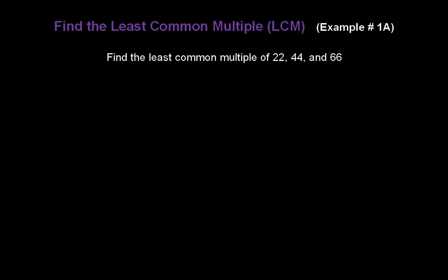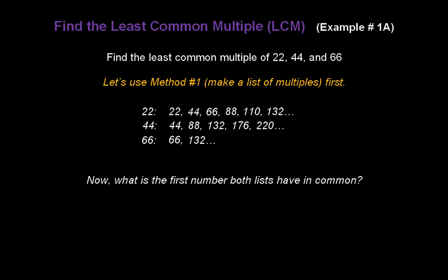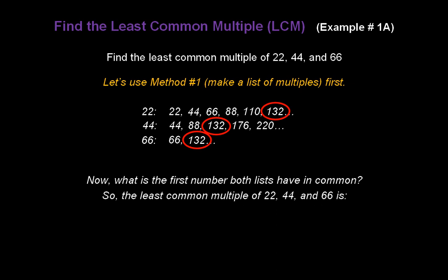Let's find the least common multiple of three numbers: 22, 44, and 66. We're going to use method number 1 first — making a list of multiples. The multiples of 22 are 22, 44, 66, 88, 110, 132, and so forth. The multiples of 44 are 44, 88, 132, 176, 220, and so forth. And the multiples of 66 are 66, 132, and you know what — we don't have to go any further. The first number all three lists have in common is 132. So, the least common multiple of 22, 44, and 66 is 132.